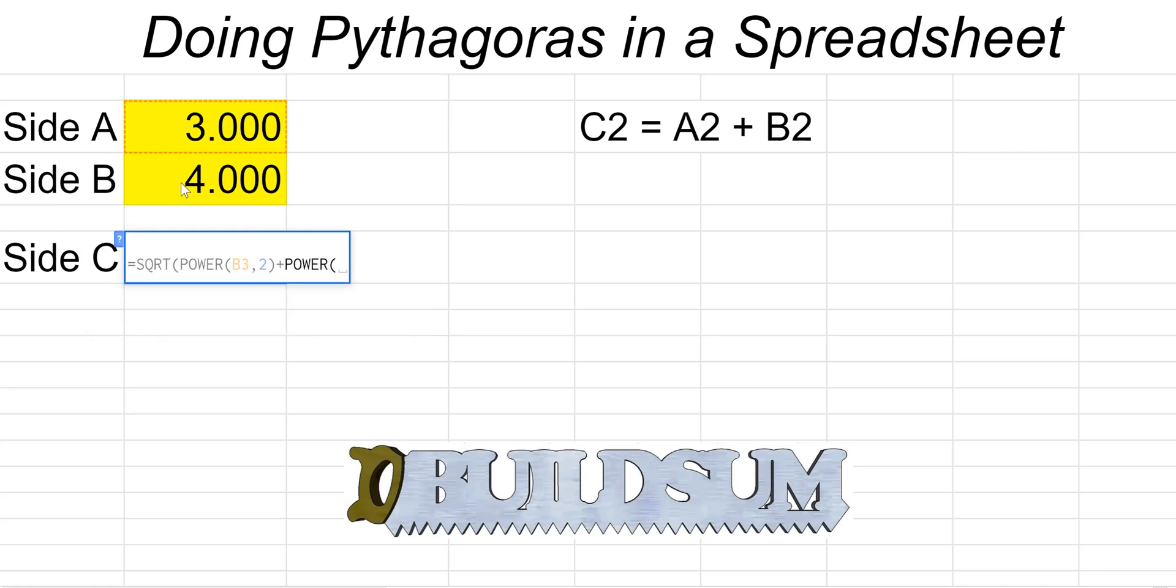We're going to click on the cell that's got 4 in it, another little comma and 2 for the power of 2, and then we're going to close the brackets.